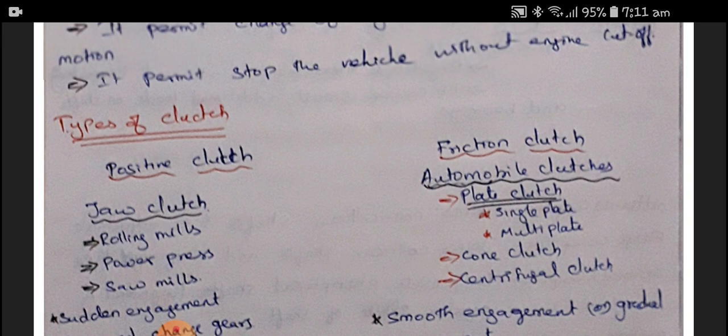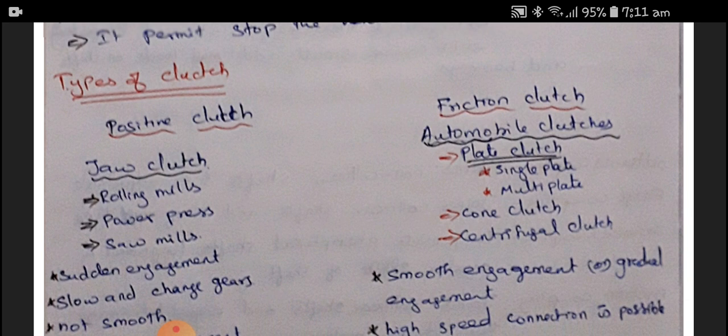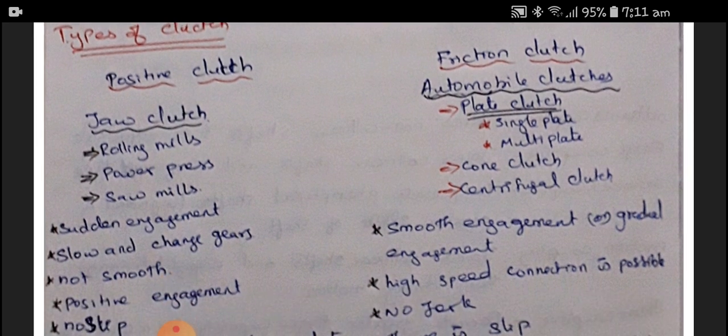Now, an important thing — types of clutches. We have two types: one is a positive clutch and another one is a friction clutch. Positive clutch is not commonly seen in day-to-day life because it is used in very old industrial applications like rolling mills, power presses, and saw mills. The type of positive clutch is a jaw clutch. Let us discuss about the positive clutch first, then friction clutch.